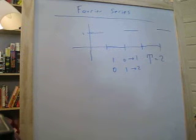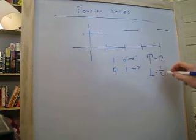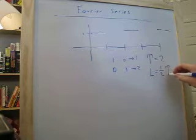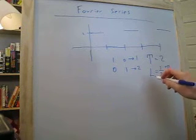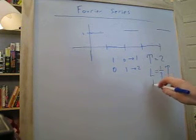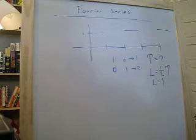Now for the Fourier series, we have a variable called l, which is always equal to 1 half the period. And we'll use that in our formulas later on. So in this case, the l would be equal to 1. So let's get on to what you will see with the Fourier series.